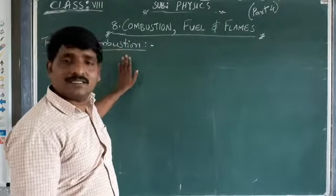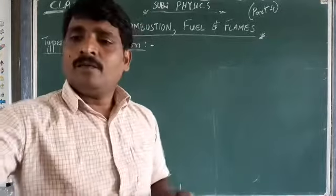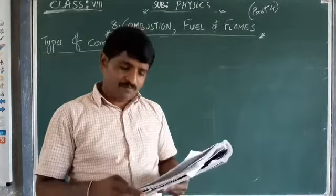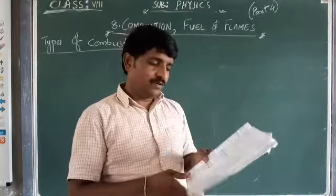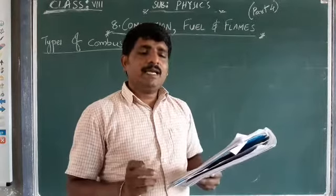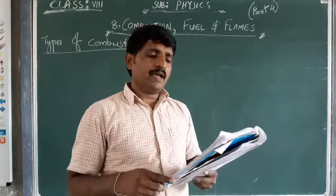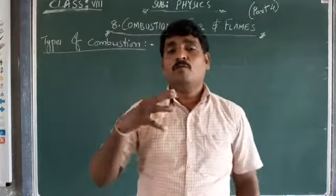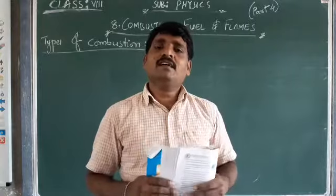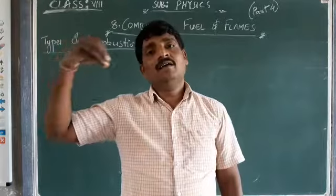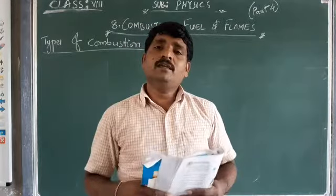Now we have to discuss types of combustion. Before that, let us understand some concepts. Go to page number 111. After activity 4 there is a diagram on types of combustion. During summer time, dry grass catches fire in the forest, it spreads to the trees, and very soon the whole forest will be on fire. It is very difficult to control such a forest fire.